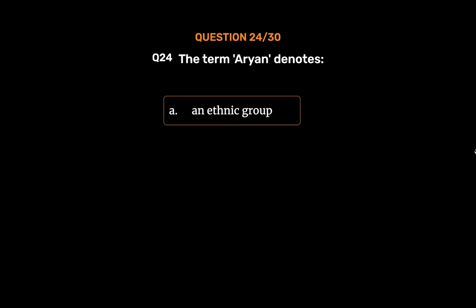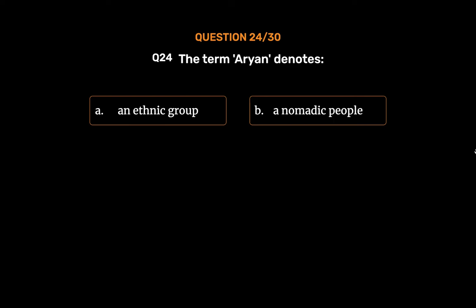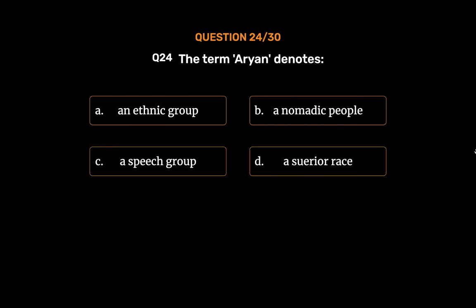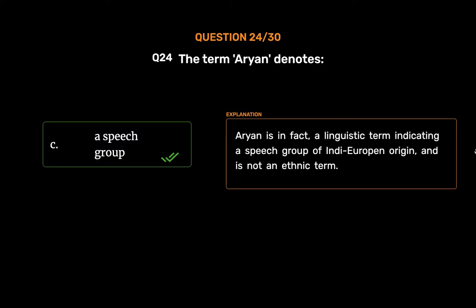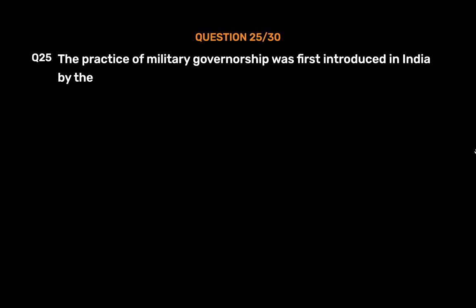Question number twenty-four: The term 'Aryan' denotes — Option A: an ethnic group, Option B: a nomadic people, Option C: a speech group, Option D: a superior race. The correct answer is Option C, a speech group. 'Aryan' is in fact a linguistic term indicating a speech group of Indo-European origin; it is not an ethnic group or an ethnic term.